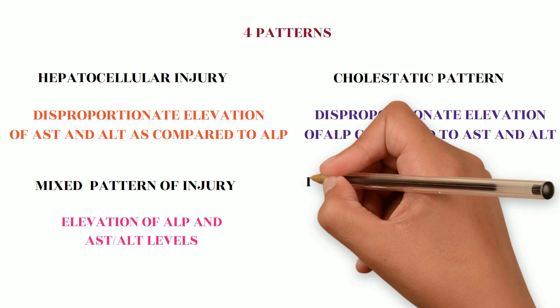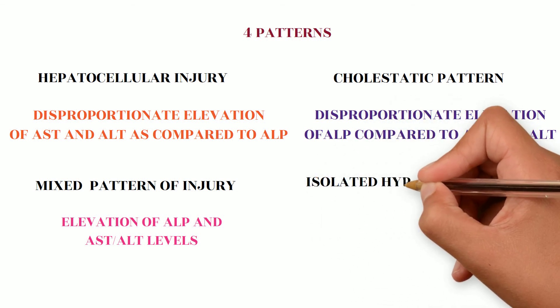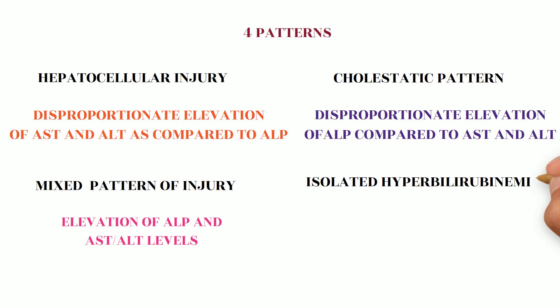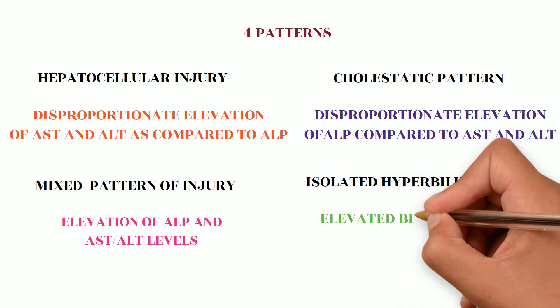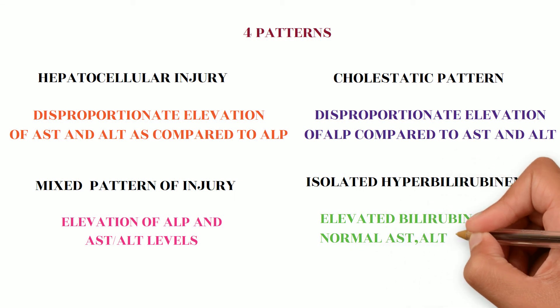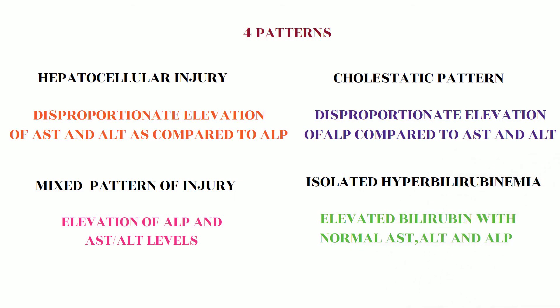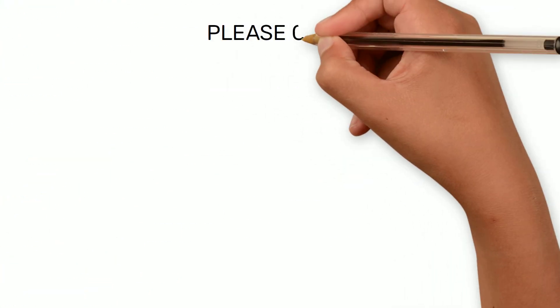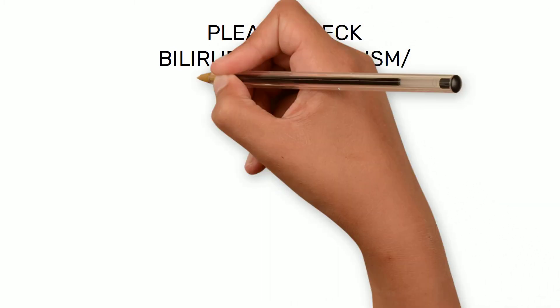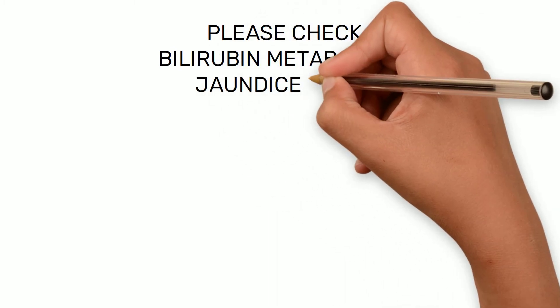The fourth pattern is isolated hyperbilirubinemia, where there is elevated serum bilirubin but levels of AST, ALP, and ALT are normal. Please review bilirubin metabolism, jaundice types, and causes for further understanding.